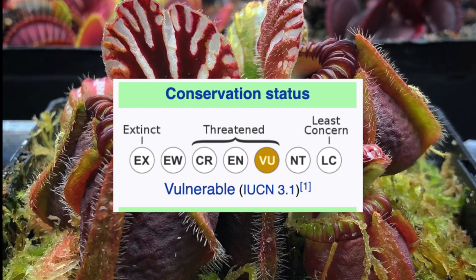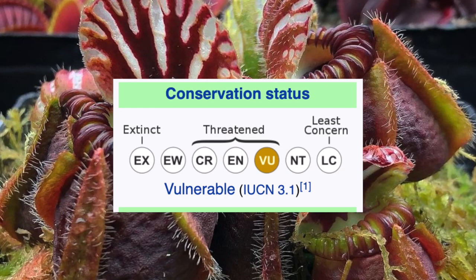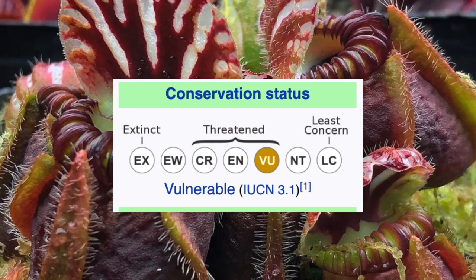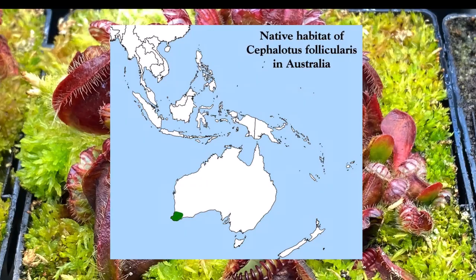As far as conservation status goes, Cephalotus follicularis is currently listed as vulnerable, meaning it has been categorized by the International Union for Conservation of Nature as being threatened with extinction unless the threatening circumstances are fixed. Vulnerability is mainly caused by the destruction of a species' natural habitat, so we have to be very careful not to cause any more damage and should take efforts to remedy any damage already done.